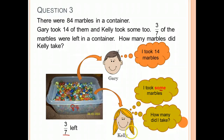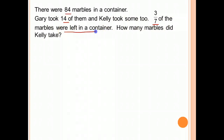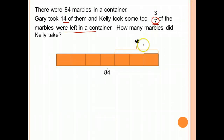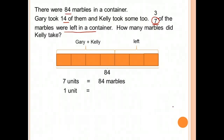Let's draw our models to help us see. There were 84 marbles in a container. Gary took 14 and Kelly took some. 3/7 of the marbles were left in the container, so the whole is 7 units and 84 marbles is the whole. 3/7 were left, and the rest were taken by Gary and Kelly. So 7 units is 84 marbles, and 1 unit is 84 divided by 7, which is 12 marbles.